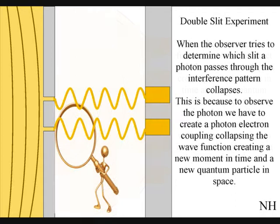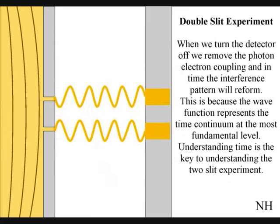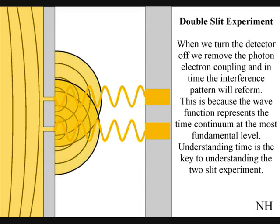This is because, to observe a photon, we have to create a photon-electron coupling, collapsing each wave front into a new quantum particle that will have its own position in space and time. When we turn the detector off, we remove the photon-electron coupling, and in time the interference pattern will reform.